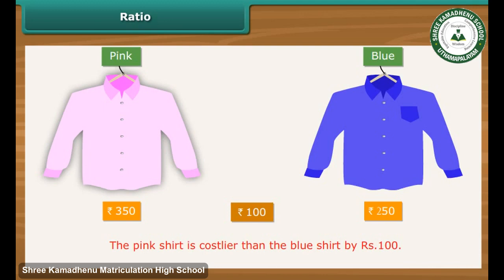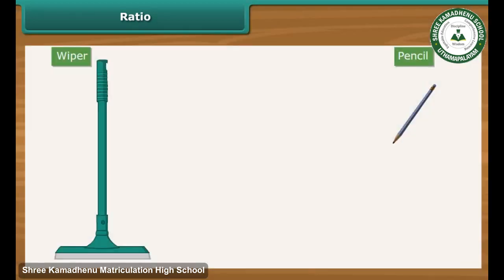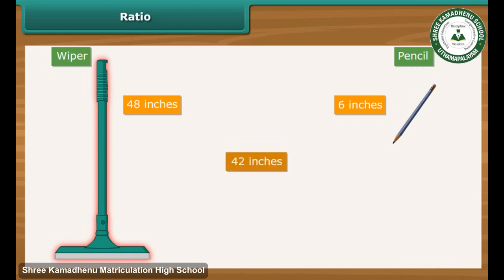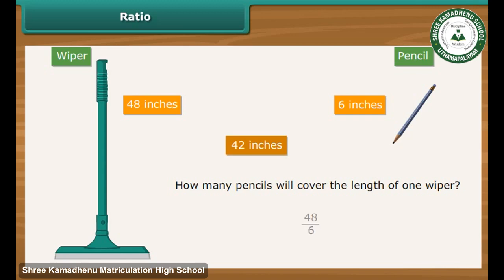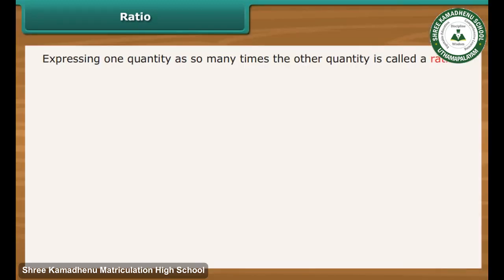Comparison by difference does not make sense when we compare quantities and values that are wide apart. For example, suppose we compare a 6-inch long pencil with a 48-inch long wiper. The wiper is 42 inches longer than the pencil. However, the difference does not bring out clearly the extent of variation in the lengths of the wiper and the pencil. How many pencils will cover the length of one wiper? The answer is 48 divided by 6, that is 8. In other words, the wiper is 8 times longer than the pencil. Expressing one quantity as so many times the other quantity is called a ratio.